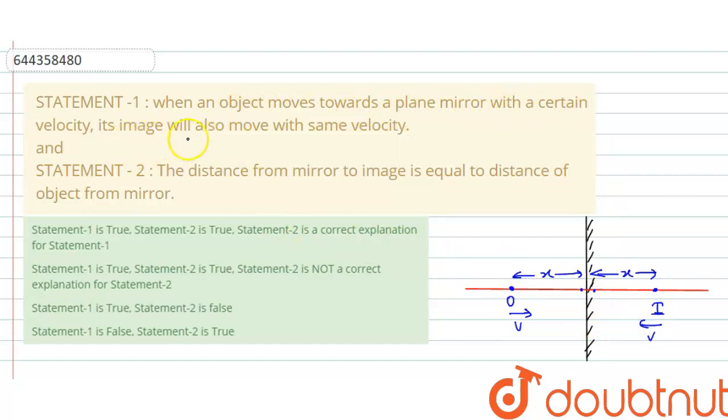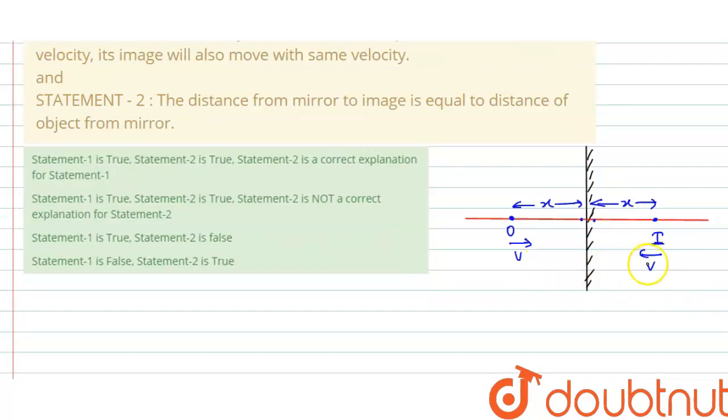Over here you can see, speed of object and image is same, but direction of velocity of object and image is opposite. Here we can write: velocity of object is equal to minus velocity of image, because their directions are opposite. But their magnitudes are same.